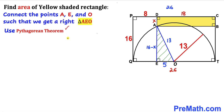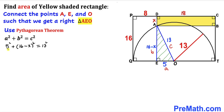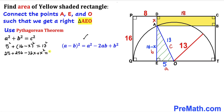We are going to use the Pythagorean theorem: a² + b² = c². The hypotenuse c is AO = 13, side a is EO = 5, and side b is AE = 16 minus x. Substituting: 5² + (16 − x)² = 13². That gives us 25 plus, expanding with the identity (a−b)² = a² − 2ab + b²: 256 − 32x + x² equals 169.